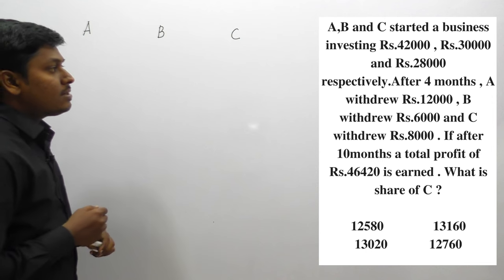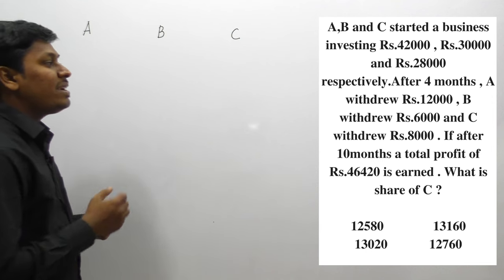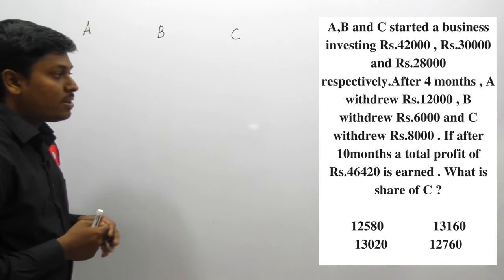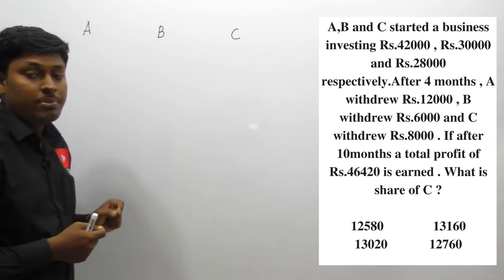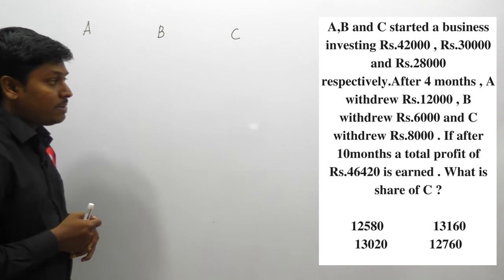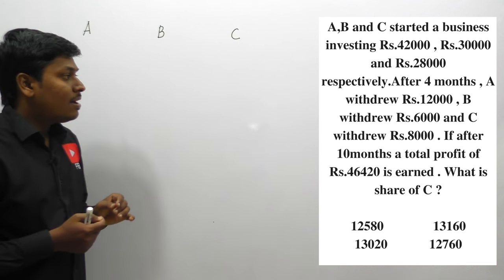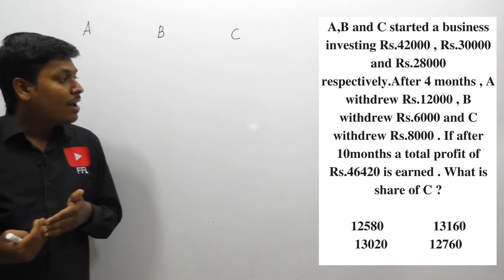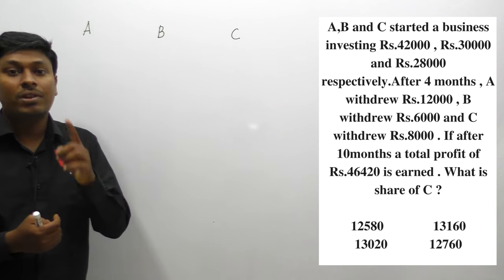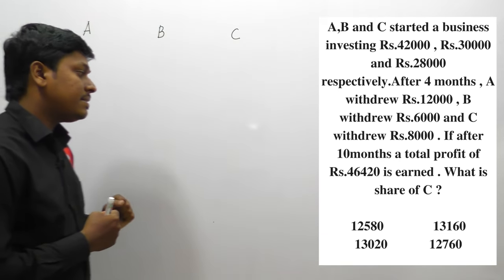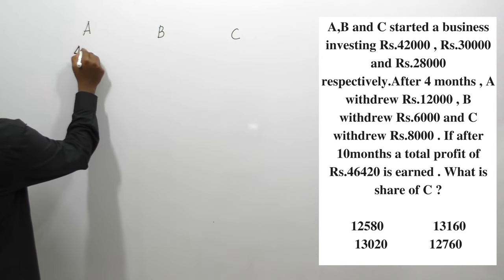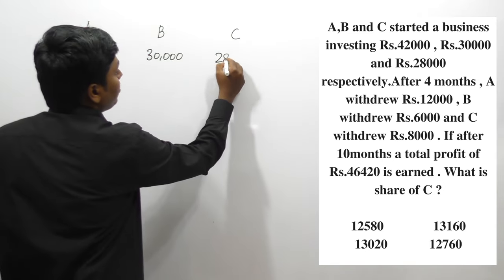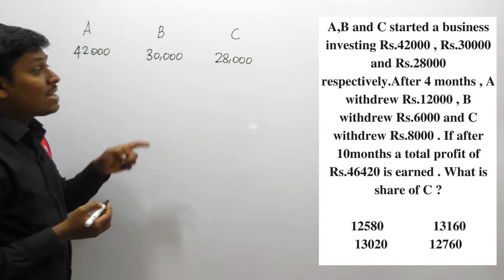Question number 4: A, B, and C started a business investing rupees 42,000, 30,000, and 28,000 respectively. After 4 months, A withdraws rupees 12,000, B withdraws rupees 6,000, and C withdraws rupees 8,000. If after 10 months the total profit is rupees 46,420, what is the share of C?